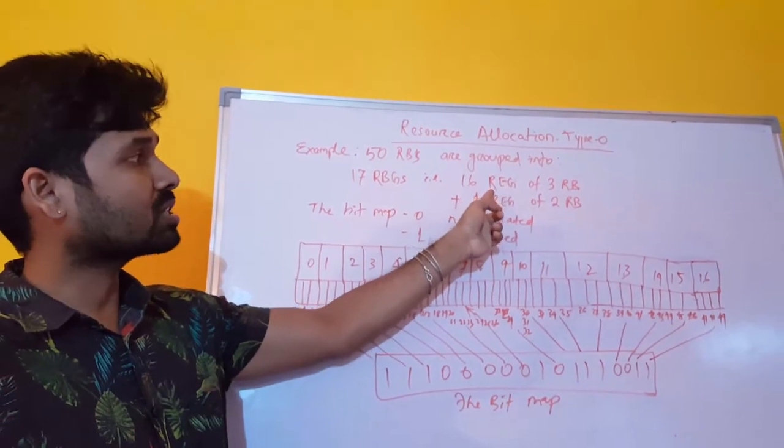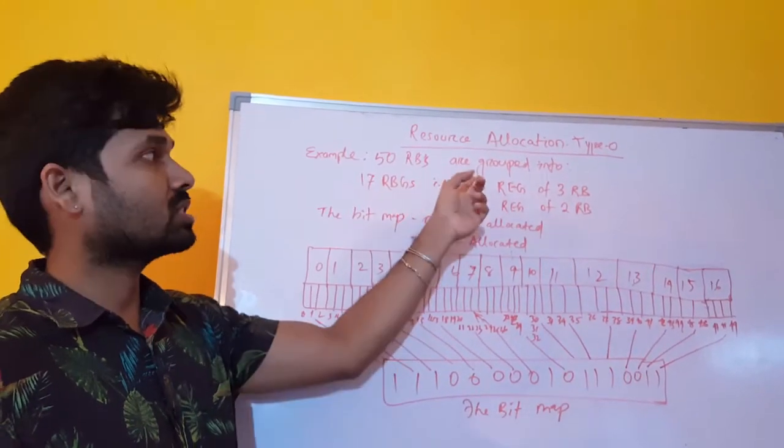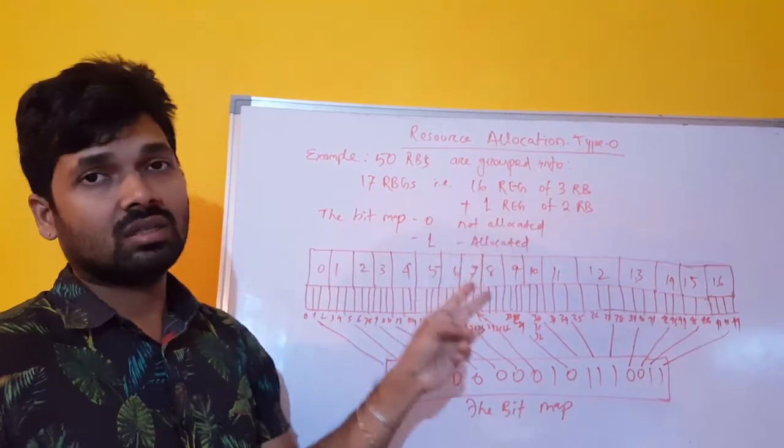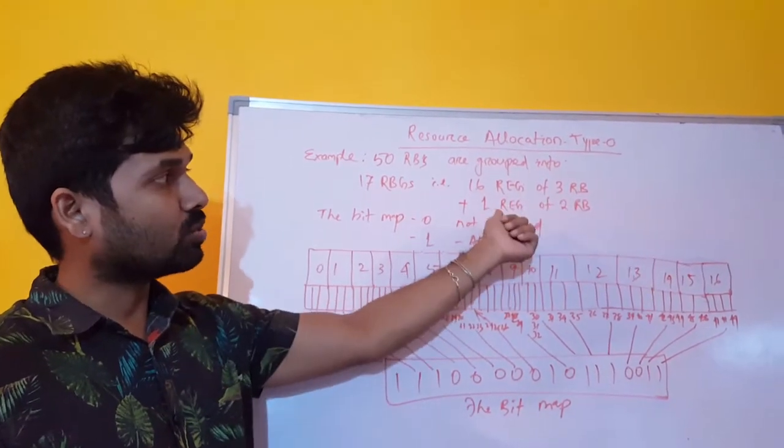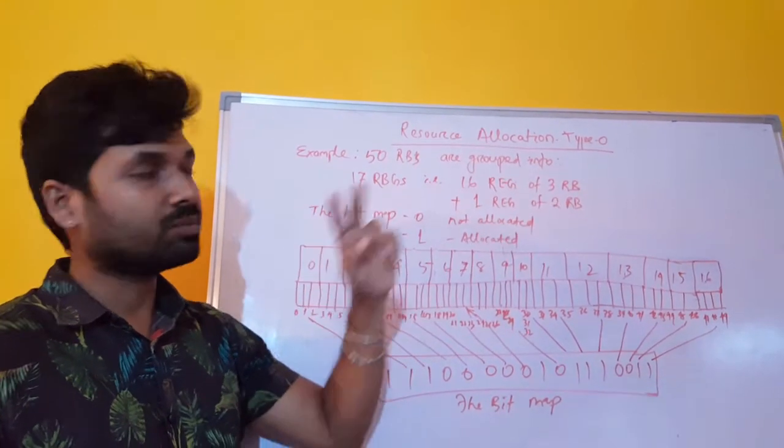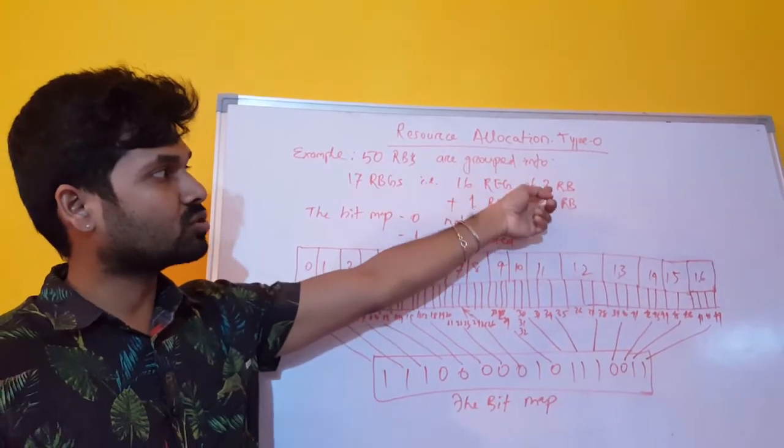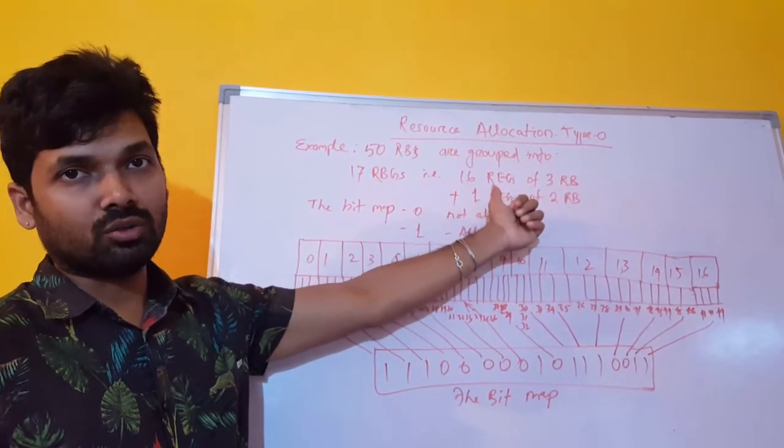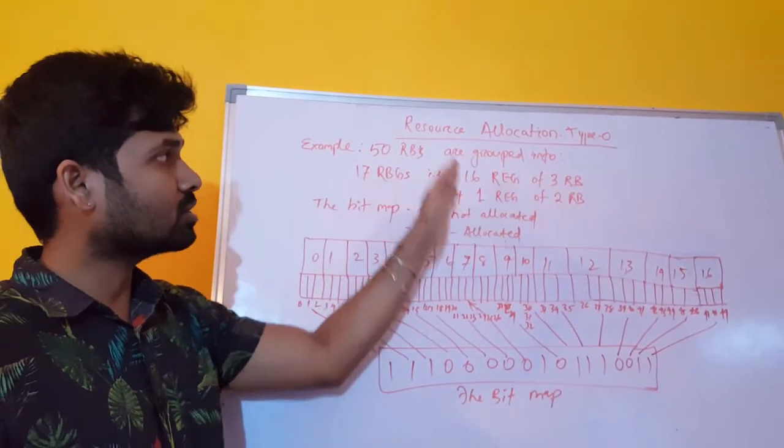16 resource element groups having 3 resource blocks. So 16 into 3 is 48 plus 1 resource block group of 2 resource blocks. That means 16 of 3 resource blocks is 48 plus 2 resource blocks in 1 group. Total 50. So 50 resource blocks.